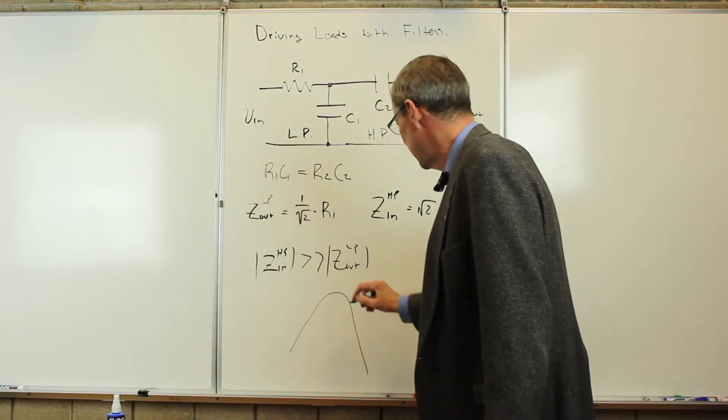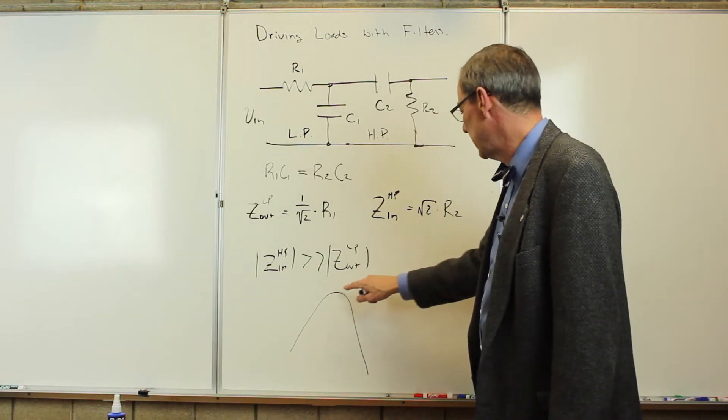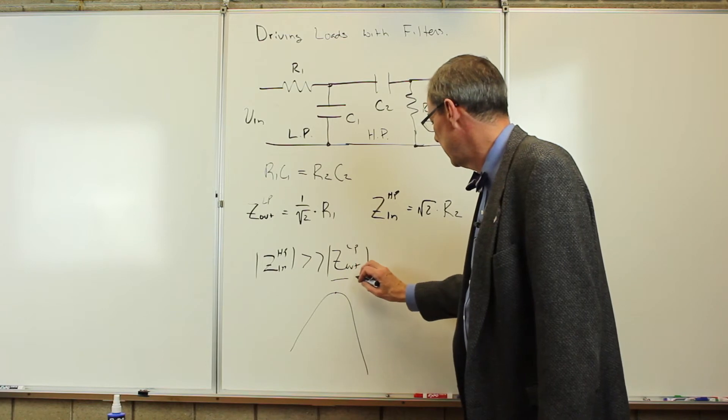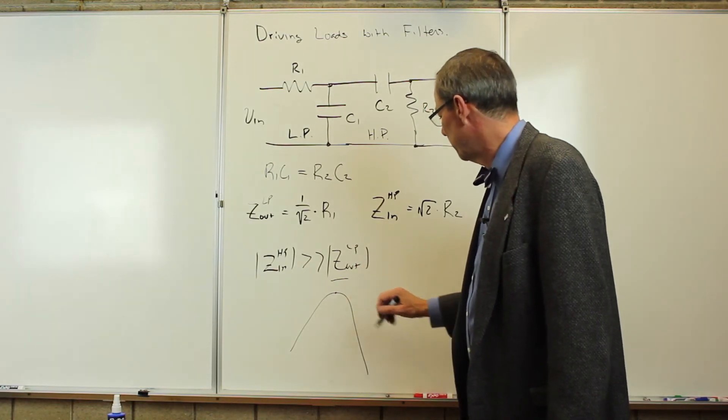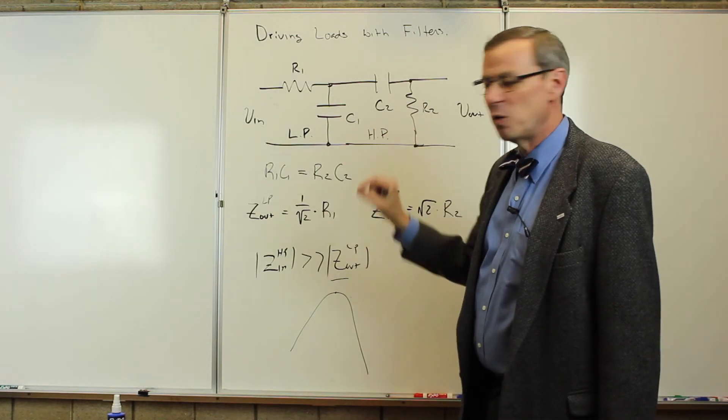And if we have chosen the resistors to be exactly right, the peak of this, if this is a gain of 1 or 0 on the Bode plot, each one of these filters is 3 dB below that. So the entire thing we expect to be about 6 dB below 0 if we've matched these filters.